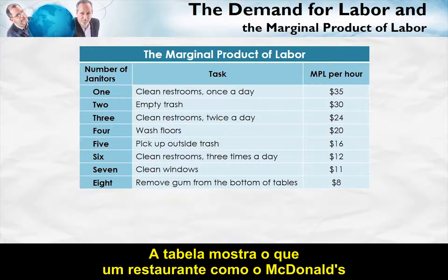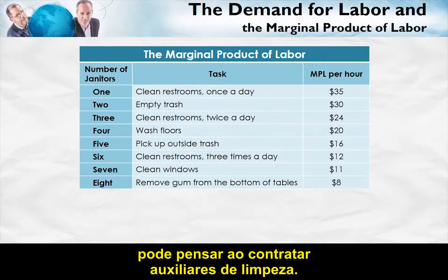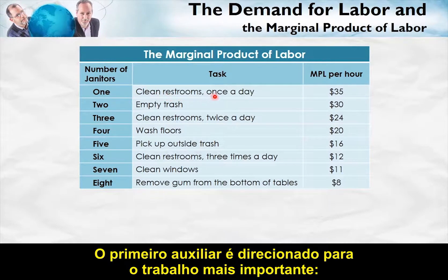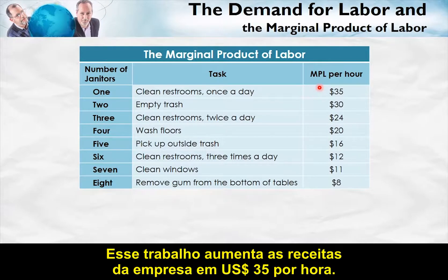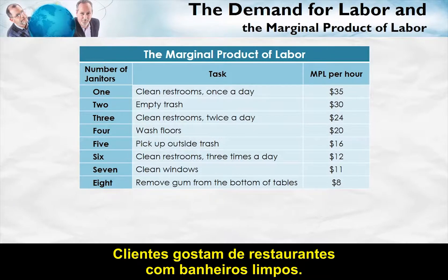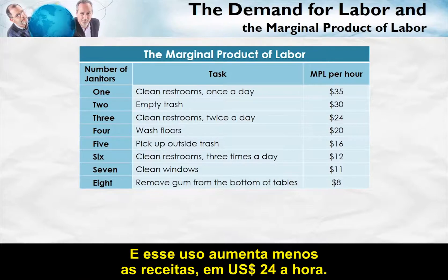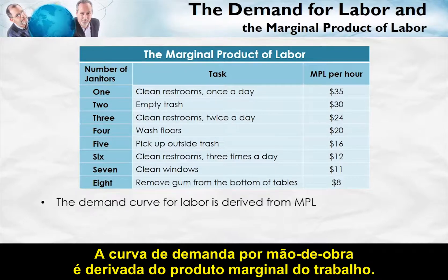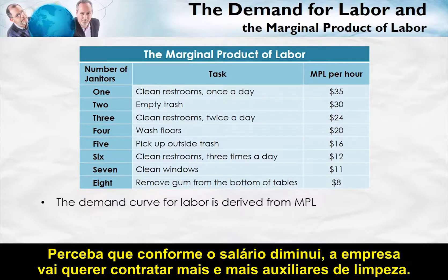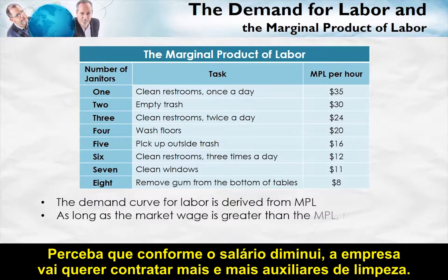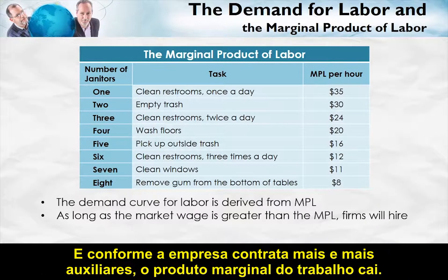This table shows how a restaurant, like McDonald's, might think about hiring janitors. The first janitor is assigned to the most important task — cleaning the restrooms once a day — and that task adds $35 an hour to the firm's revenues, because customers like restaurants with clean restrooms. The second janitor empties the trash. The third janitor hired will also be assigned to cleaning restrooms, now done twice a day, and that use increases revenues by less — $24 an hour. The demand curve for labor is derived from the marginal product of labor.